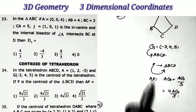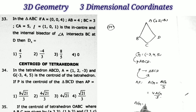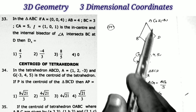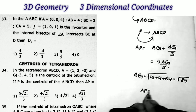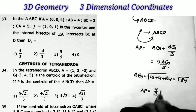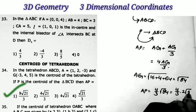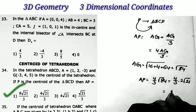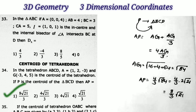A = (1, 2, -3) and G = (-3, 4, 5). Finding AG: √[(1-(-3))² + (2-4)² + (-3-5)²] = √[16 + 4 + 64] = √84 = 2√21. Therefore AP = (4/3) × 2√21 = 8√21/3, which is the first option.